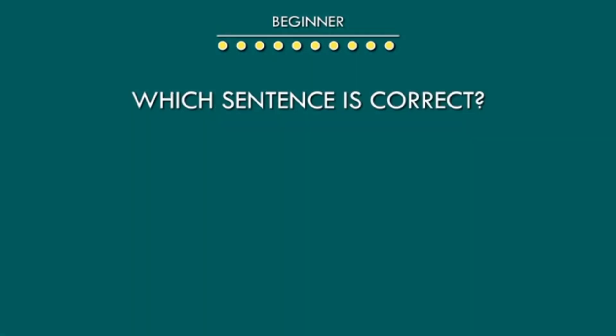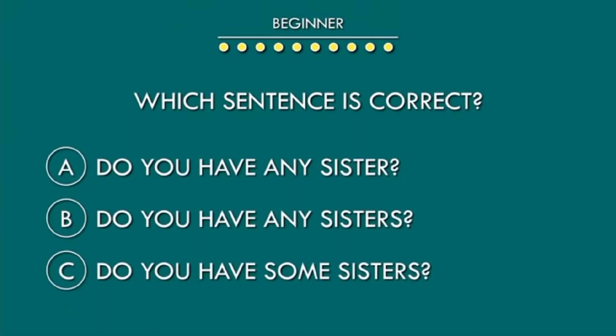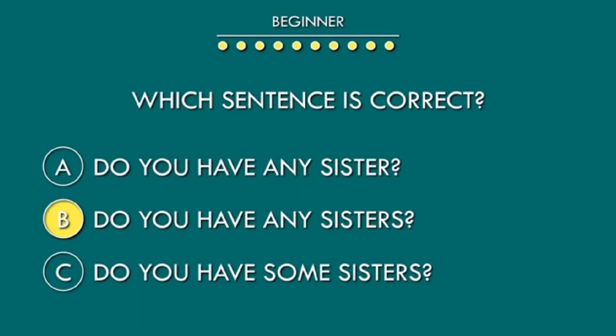Which sentence is correct? A: Do you have any sister? B: Do you have any sisters? C: Do you have some sisters? B is the correct option.